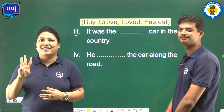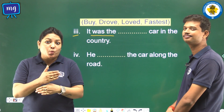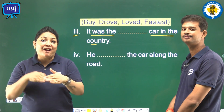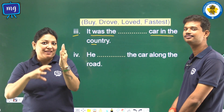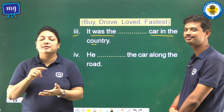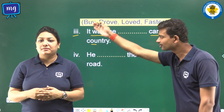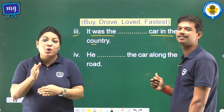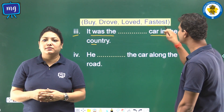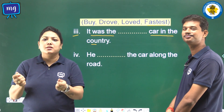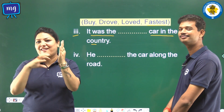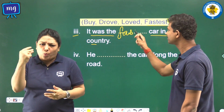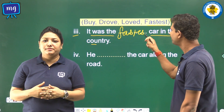Third: It was the dash car in the country. See in the box — it was the fastest car in the country. So we shall write 'fastest' in the blank.